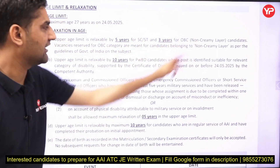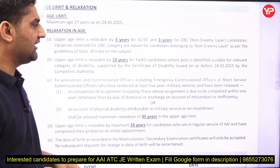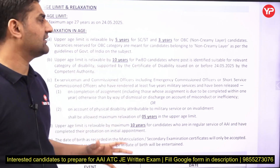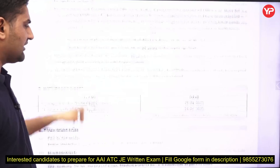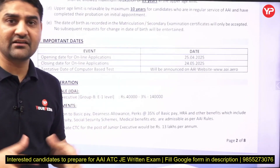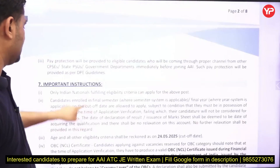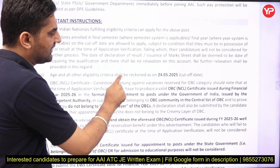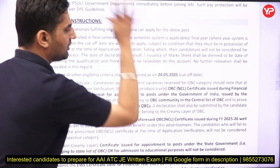There is relaxation of five years for SC/ST, three years for OBC (non-creamy layer), and ten years for PwBD category students. All dates and eligibility criteria are to be checked as of 24th of May 2025. The advertisement clearly states: 'Age and all other eligibility criteria shall be reckoned as on 24th of May 2025' — the cutoff date.